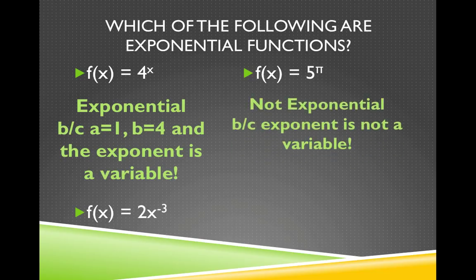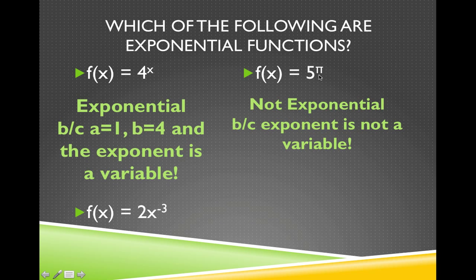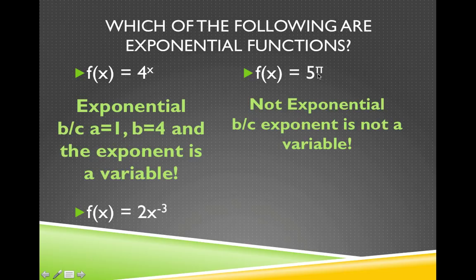f(x) equals 5 raised to the pi power is not exponential because this pi, that exponent of pi, is not a variable. Pi is not a variable, it's just a way that we write the number 3.14159, etc. It's an irrational number. So this is not exponential.